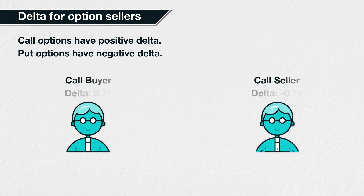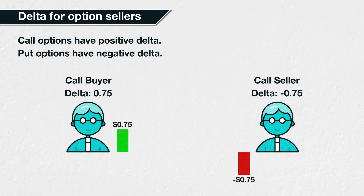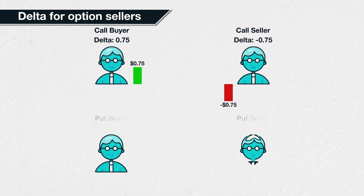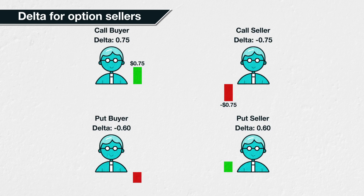If someone buys a call option with a delta of 0.75, for example, the seller of that option will have a delta of negative 0.75. If the underlying price increases by $1, the buyer of the call option can expect it to have increased in value by 75 cents, meaning a 75 cents profit. For the seller, this increase in value represents a loss of the same amount. More generally, the buyer of a call option has a positive delta, the seller of a call option has a negative delta, the buyer of a put option has a negative delta, and the seller of a put option has a positive delta.